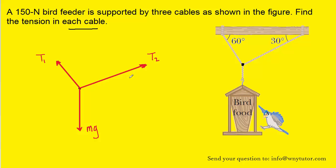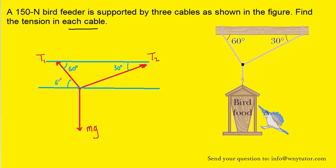Let's add detail to this free body diagram that includes information about the angles. The angle on the left is 60 degrees and the one on the right is 30 degrees. What's important to recognize is that the beam to which the ropes are attached is parallel to an imaginary line drawn here. From geometry, using alternate interior angles: if the upper-left angle is 60 degrees, then the corresponding lower angle is also 60 degrees. Similarly, if the upper-right angle is 30 degrees, then that corresponding angle is also 30 degrees.